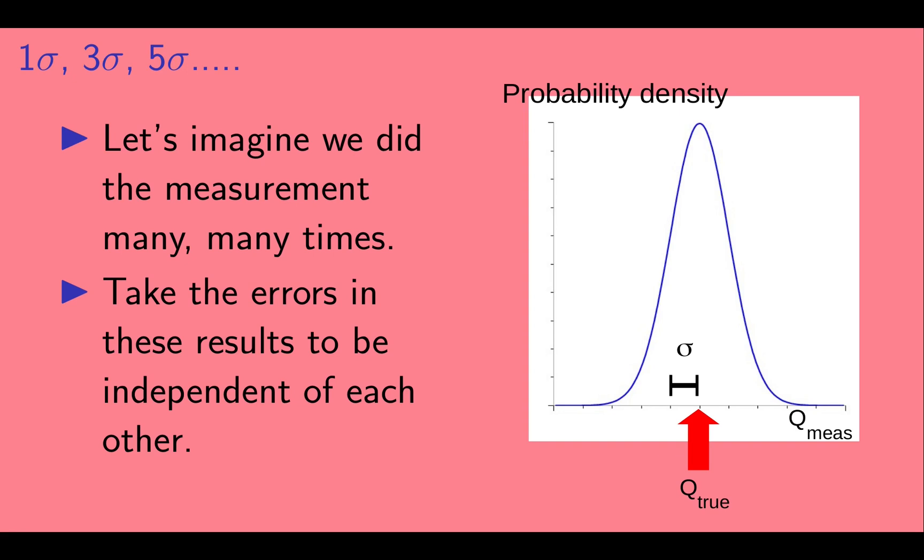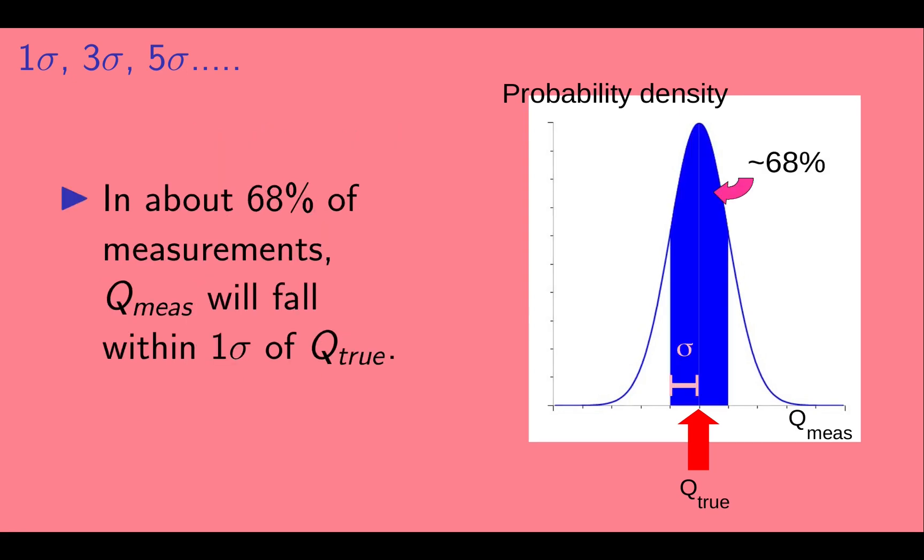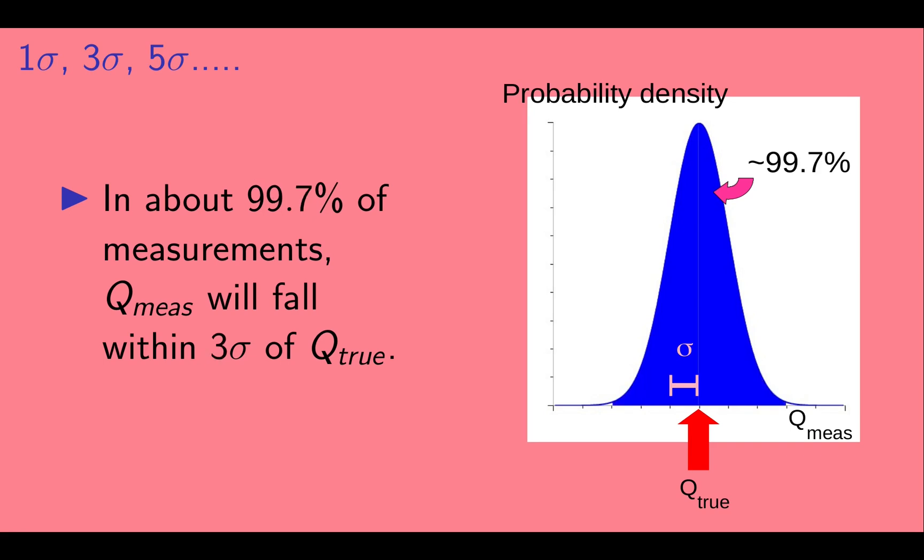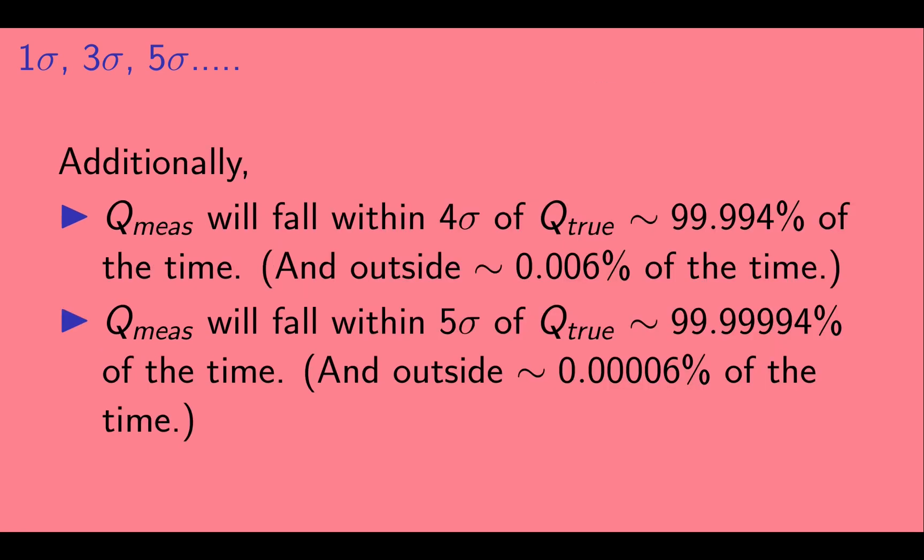Now let's imagine that we did the experiment many, many times. We will take the errors in these results to be independent of each other. In about 68% of measurements, Q measured will fall within 1 sigma of Q true. In about 95% of measurements, Q measured will fall within 2 sigma of Q true. And in about 99.7% of cases, it will fall within 3 sigma. Additionally, it will fall within 4 sigma about 99.994% of the time, and within 5 sigma about 99.99994% of the time.